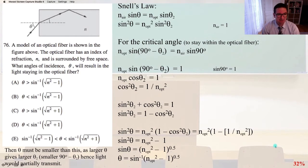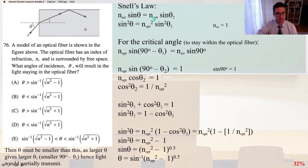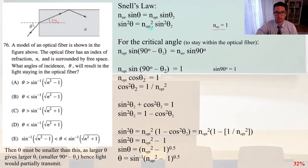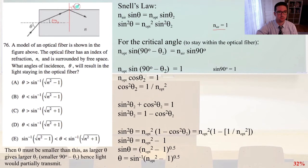Number 76 — this is a tough one. A model of an optical fiber is shown in the figure above. The optical fiber has an index of refraction n and is surrounded by free space. What angles of incidence theta will result in the light staying in the optical fiber? We apply Snell's law: n_air times sine theta equals n_opt times sine theta_2. We note that n_air equals 1. For the critical angle — the angle needed to stay within the fiber — our critical angle is 90 degrees.